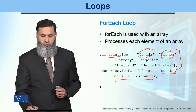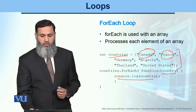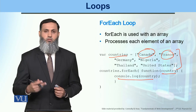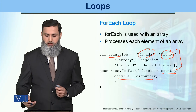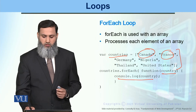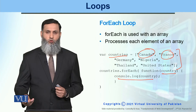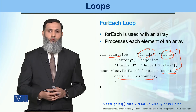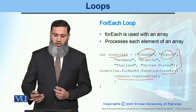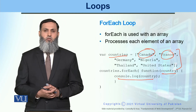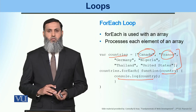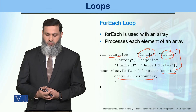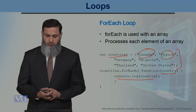The first time the forEach statement executes, the country variable will hold Canada — we log it using console.log to display it on the console. In the next iteration, country will be France and we log it. Then Germany comes in the next iteration and we log it. If we pass two parameters to this function, one parameter becomes the value and the other becomes the index.